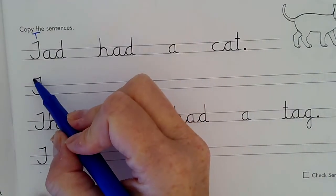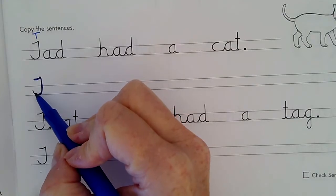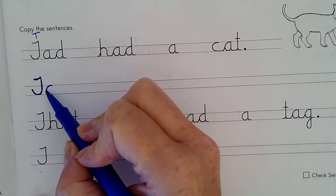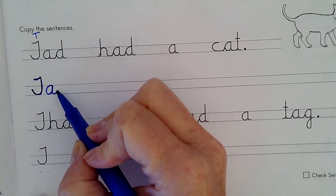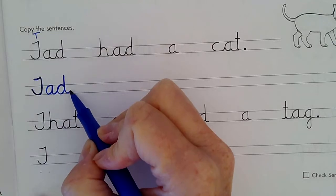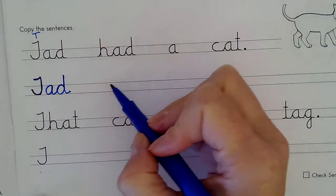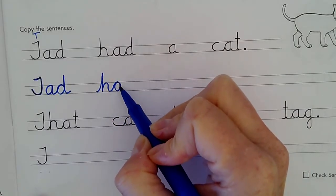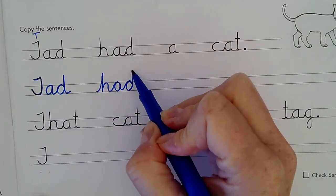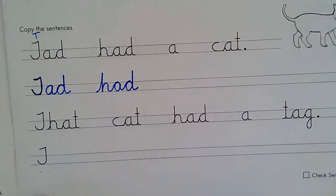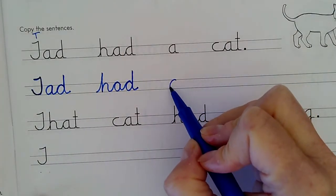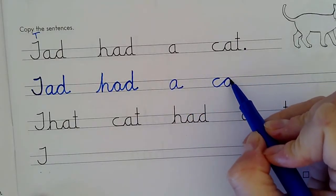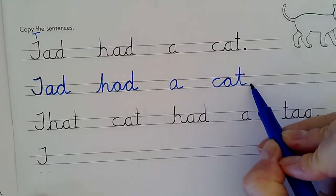So I can trace this cursive T, and then I can copy the rest of the letters. So I'm going to copy A, and then the D. So it says Tad. And then I'm going to copy had. Remember that I don't pick up my pencil. I try to connect all my letters. A. Cat. Cross my T and put my period.